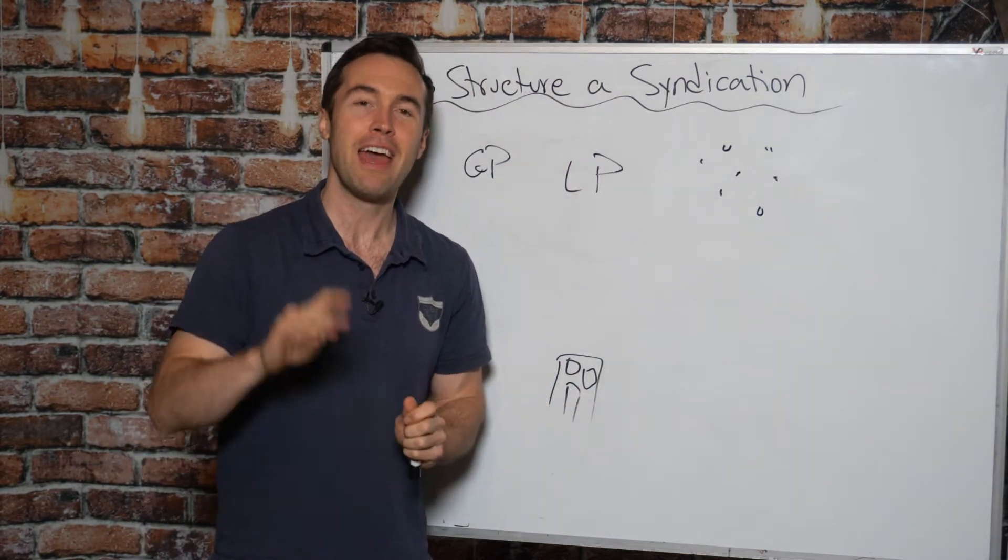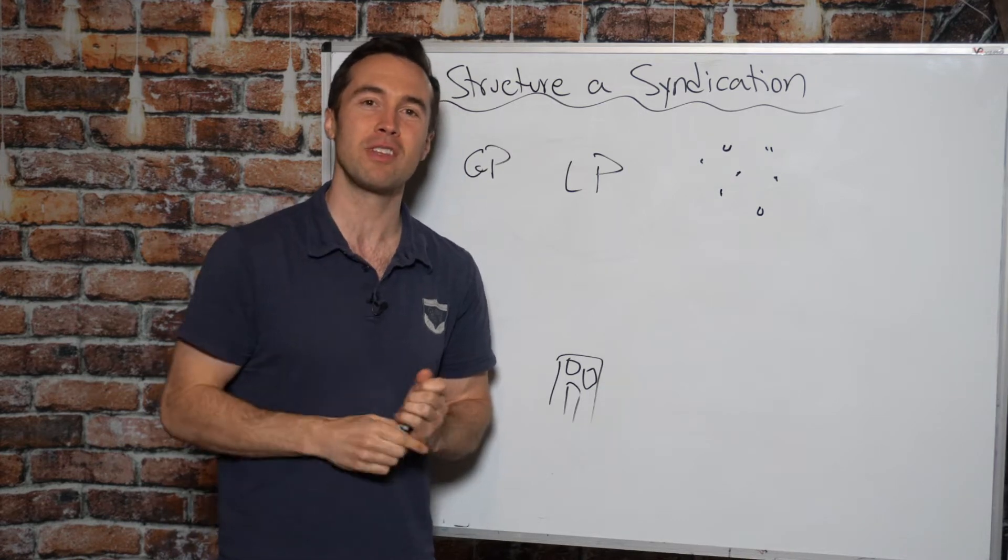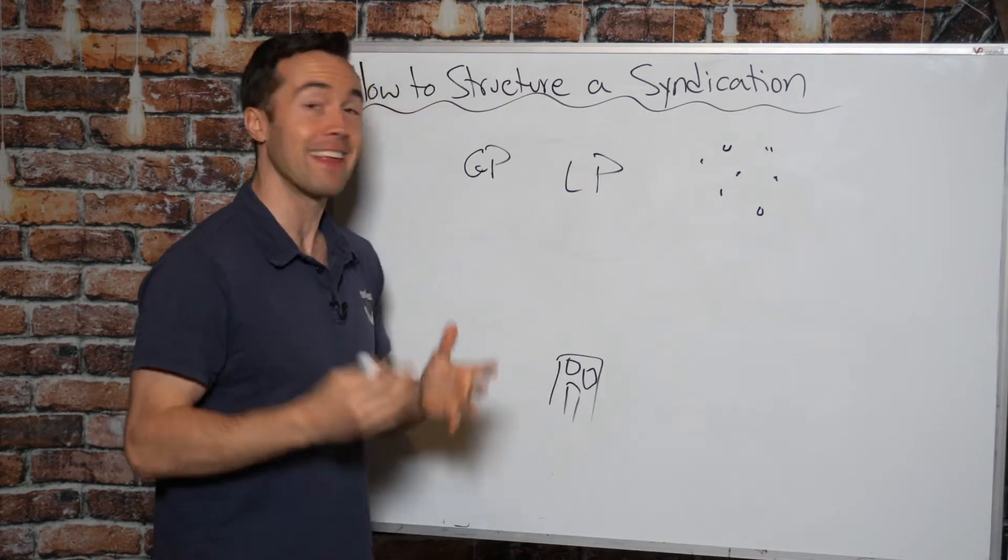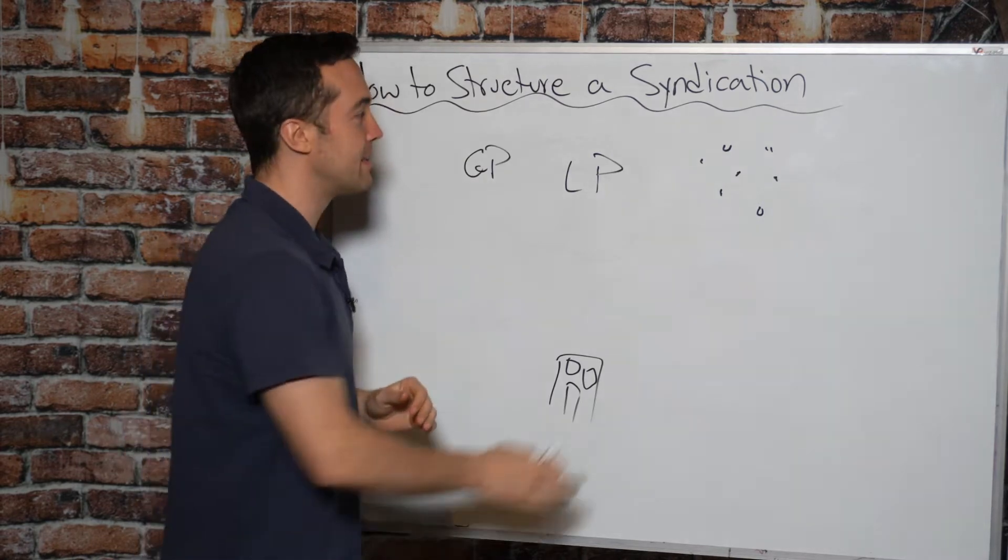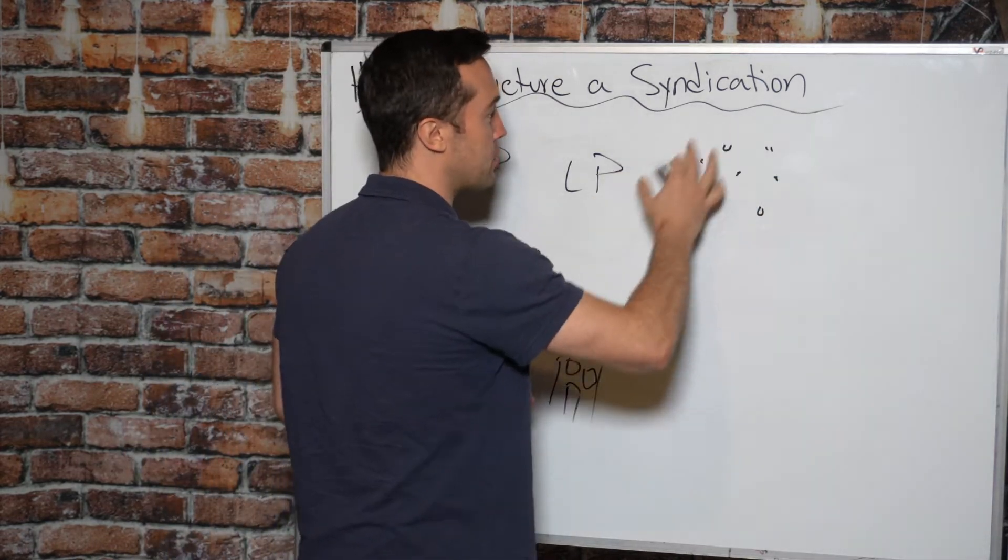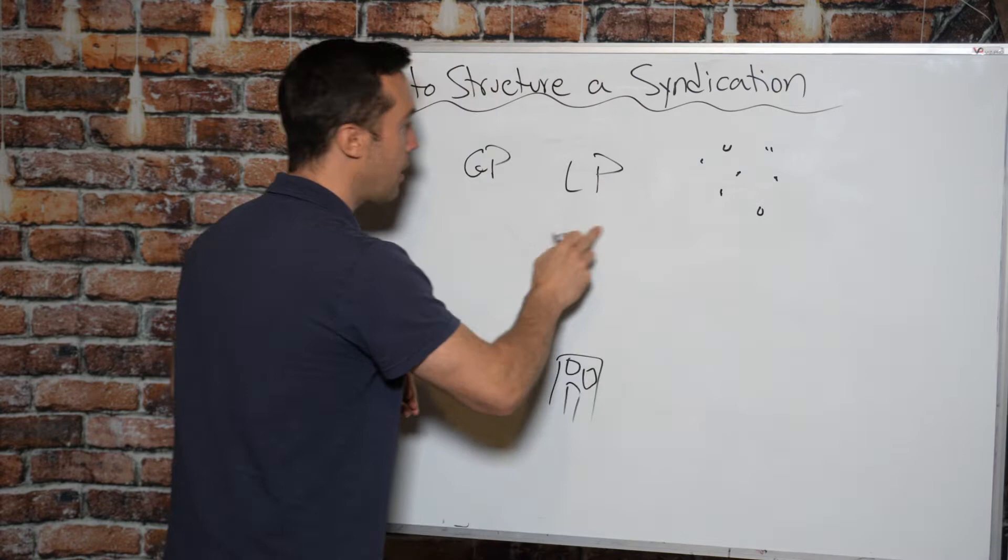The real estate matrix is basically the four components every single real estate deal must have for a deal to happen. And capital is one of those pieces. And this is what the passive investors, the limited partnership bring to the equation.